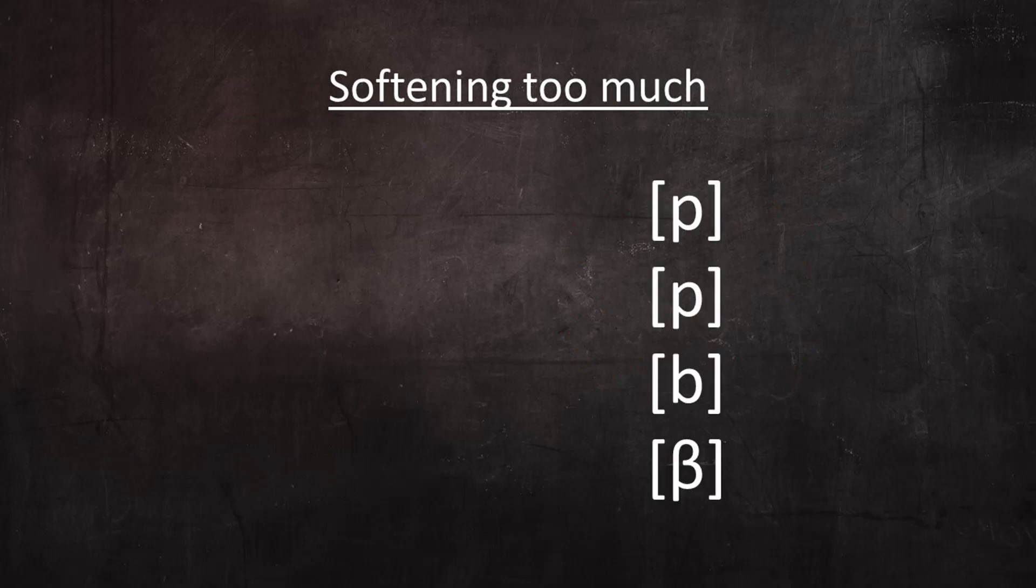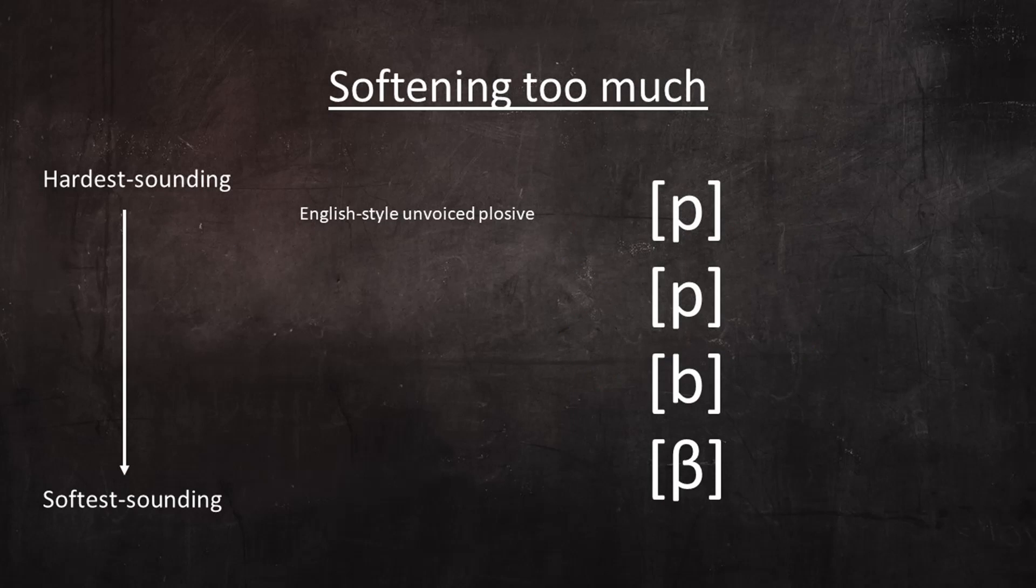I'll use the unvoiced and voiced bilabials as examples. Pretty much all of us intuitively arrange sounds from hard to soft like this: with the English-style unvoiced plosive as the hardest sound, the Spanish-style unvoiced stop one step softer, the voiced stop one step softer than that, and the unvoiced approximant or fricative as the softest.